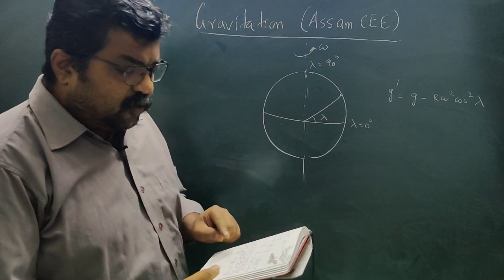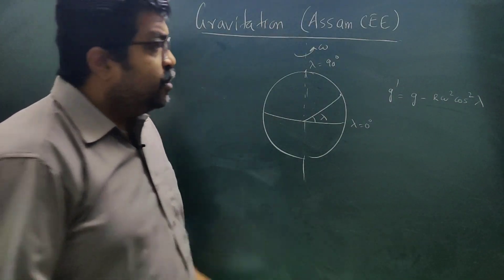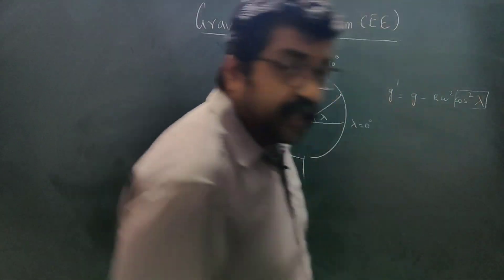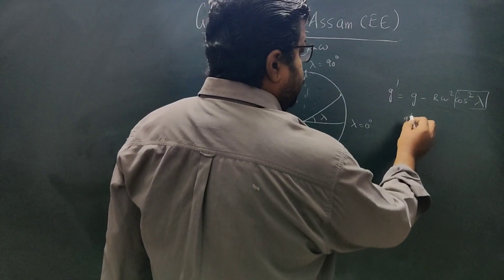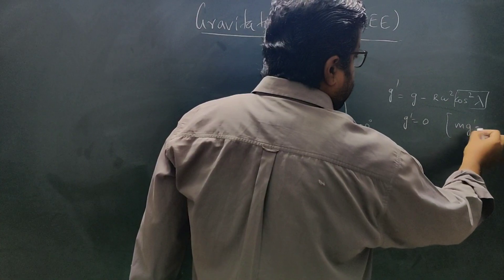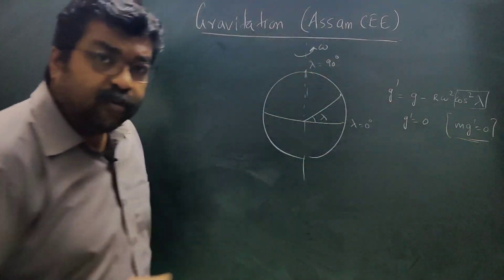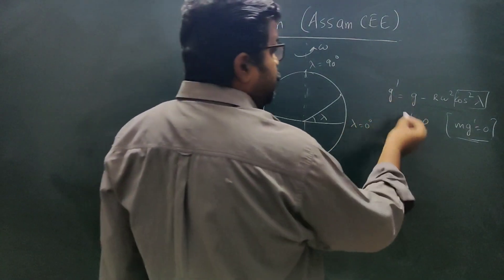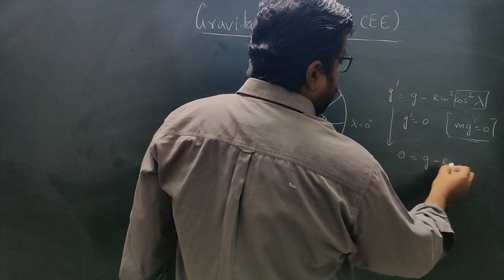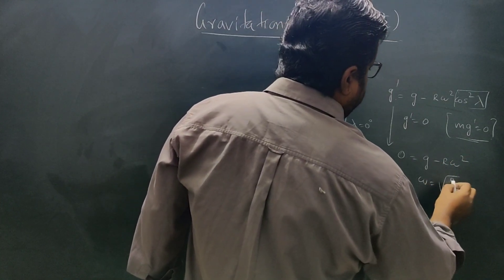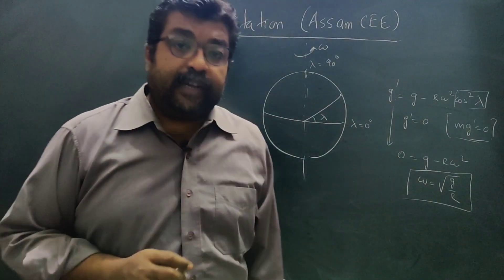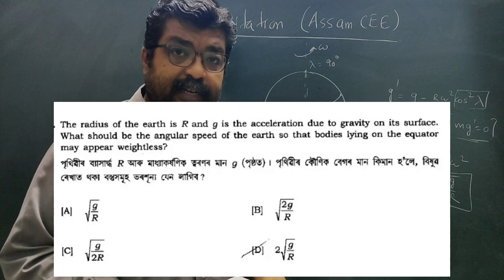For weightlessness at the equator, we set g' equal to zero. At the equator, lambda equals zero, so cos squared lambda equals one. Therefore: 0 equals g minus R omega squared. Solving, omega equals the square root of g divided by R. This is the angular speed of rotation of the Earth required for weightlessness at the equator. Option A is the correct answer.